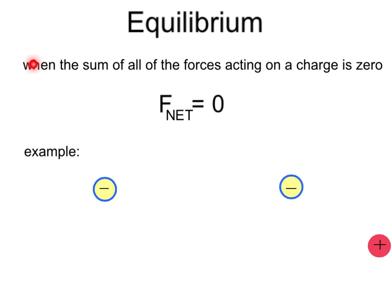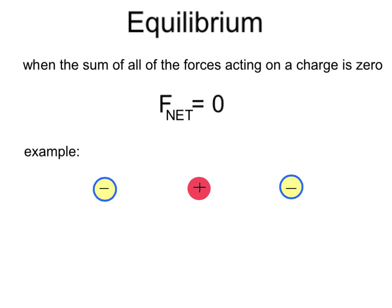Equilibrium is when the sum of all the forces acting on a charge is zero — the net electric force on the charge will be zero. For example, if we have two negative charges and we bring in a positive charge, if they're the same amount of charge, we can put the positive charge directly in between and it won't move left or right. It would be in equilibrium, and the force from each charge would be exactly equal.